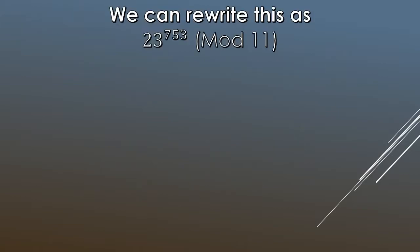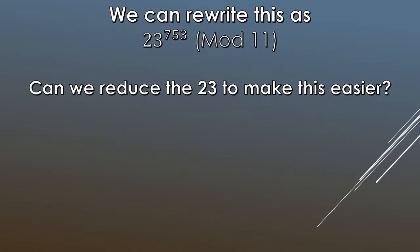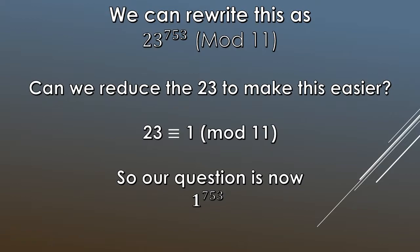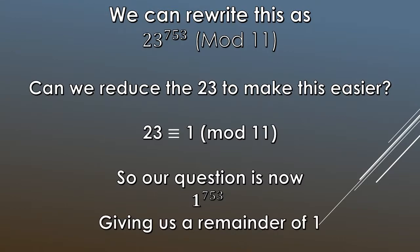The first step is to rewrite the problem. Dividing by 11 is the same as taking mod 11, so we write 23^753 mod 11. Next, we reduce the base: look at what 23 is mod 11. Since 22 is divisible by 11, we get 23 ≡ 1 mod 11. So the question becomes 1^753 mod 11. Since 1 to the power of anything is 1, the remainder is 1. Sometimes these questions are much easier than they look!